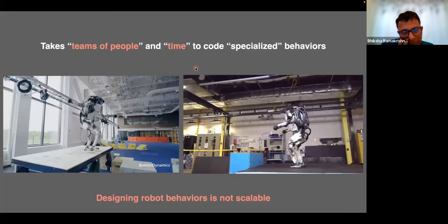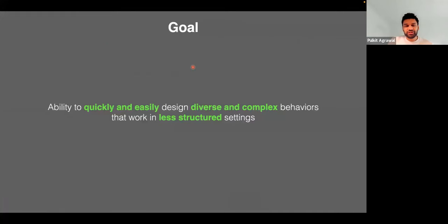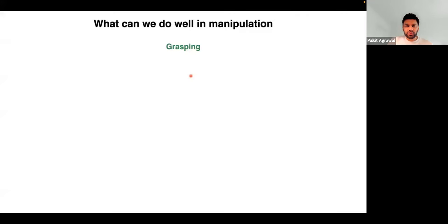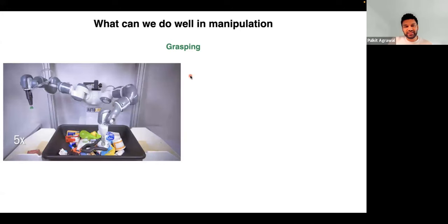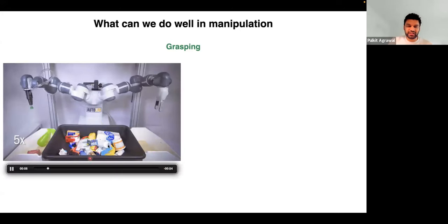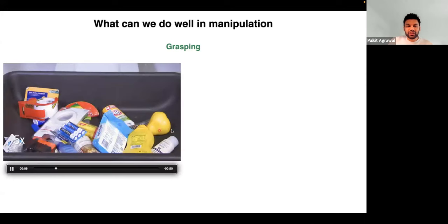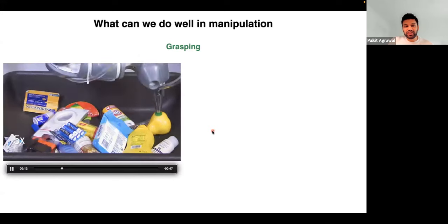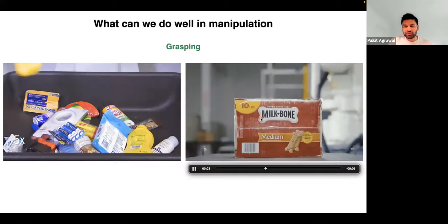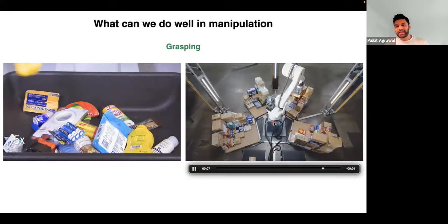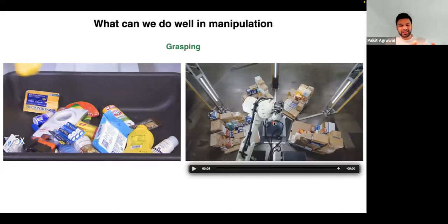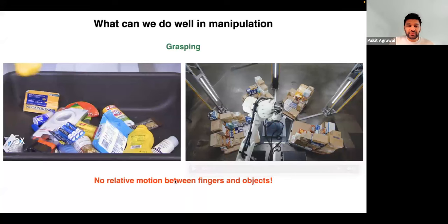The goal of this talk is to investigate how we can quickly and easily design diverse and complex behaviors that work in less structured settings. I'll begin by considering manipulation. What we can do really well is picking up objects — for example, a robot going to a pile and picking up arbitrary objects. This success in grasping has fueled many companies in logistics and warehouse spaces.